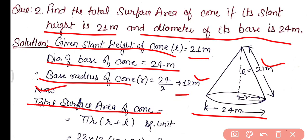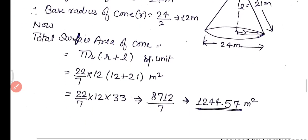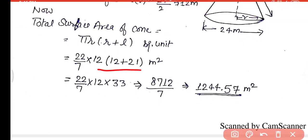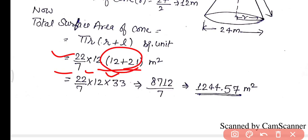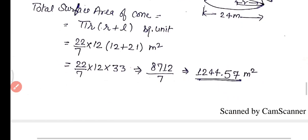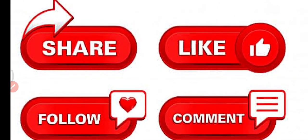Practice Q2: Find the total surface area of a cone if its slant height is 21 m and the diameter of its base is 24 m. Given: l = 21 m, diameter = 24 m so radius = 12 m. Total surface area = πr(r + l) = (22/7) × 12 × (12 + 21) = (22/7) × 12 × 33 = 8712/7 ≈ 1244.57 m². This completes worksheet number 44. If you learned from this video, please subscribe to my channel and share this video as much as you can. Thanks for watching.